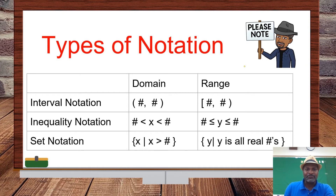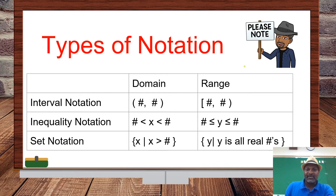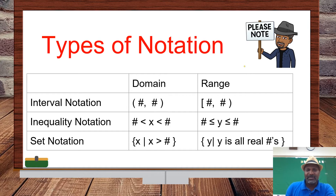Set notation is very closely related to inequality notation. Here we're saying all values of X such that X is greater than a number. Here we're saying all values of Y such that Y is all real numbers. Set notation is like a combination of describing the variable and the inequality condition.